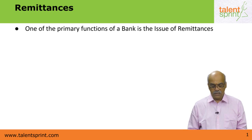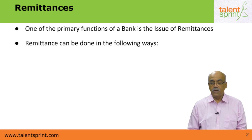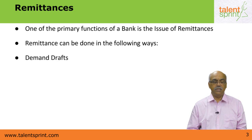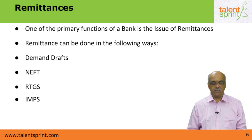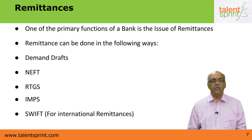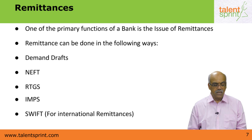Issue of remittances is one of the major and primary functions of a bank. Remittances can be done in the following ways: demand drafts, NEFT or the National Electronic Fund Transfer System, RTGS or the Real-Time Gross Settlement System, IMPS or the Immediate Payment Service System, and SWIFT — Society for Worldwide International Financial Transactions — which is applicable only for international transactions.